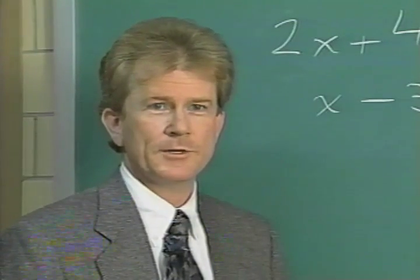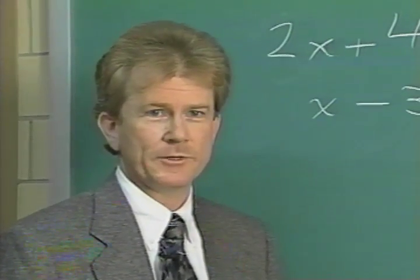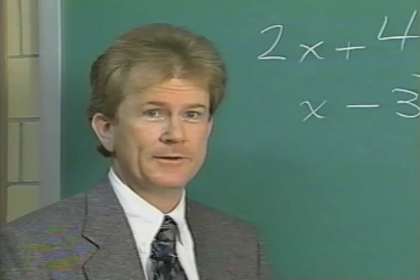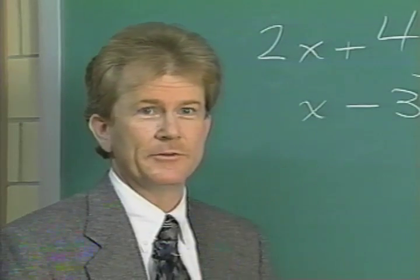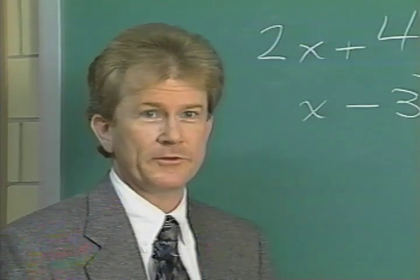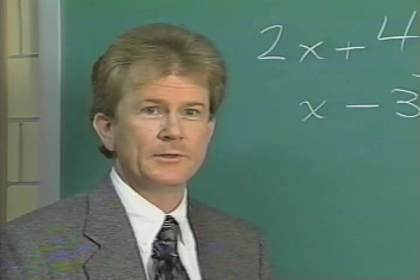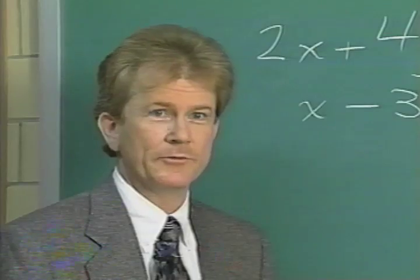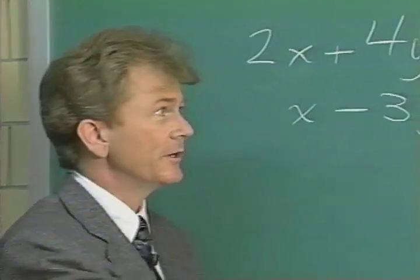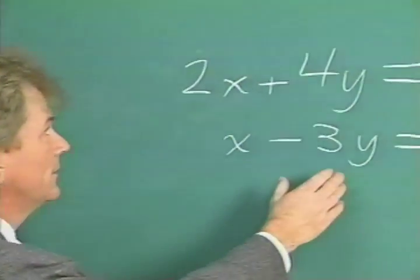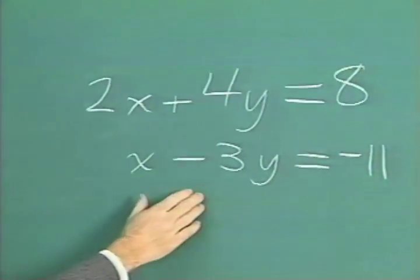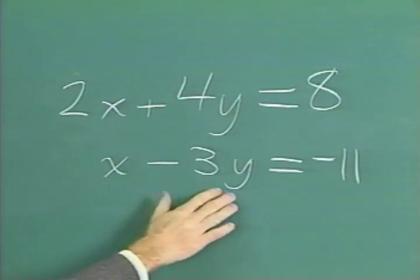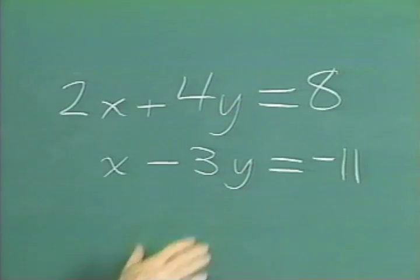To solve a full set of 29 equations and 29 unknowns would take about 25 hours. For purposes of this demonstration, we'll just solve two equations and two unknowns: 2x plus 4y equals 8, and x minus 3y equals minus 11.